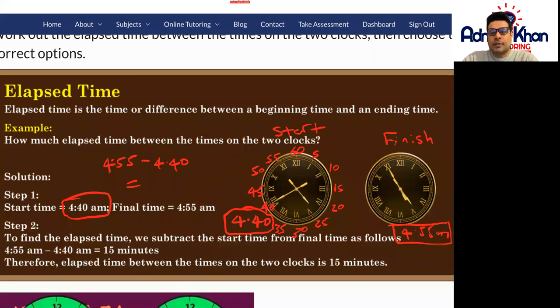Let's start with 4:40 first of all. 4:40 plus five minutes is 4:45. 4:45 plus five minutes is 4:50, and 4:50 plus five minutes is 4:55.